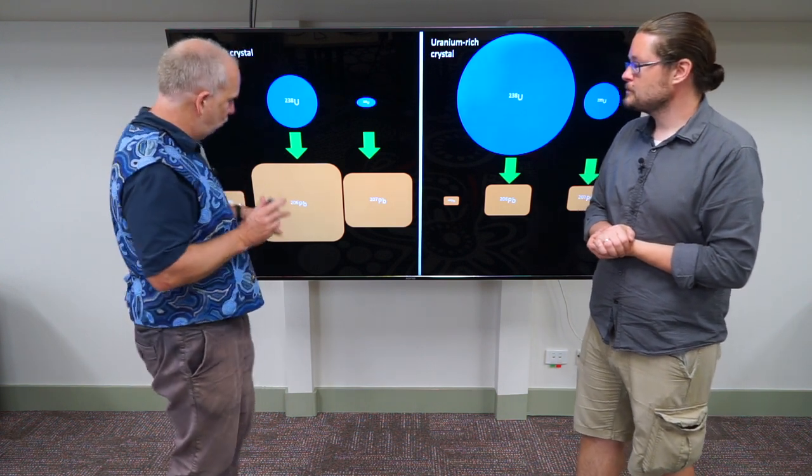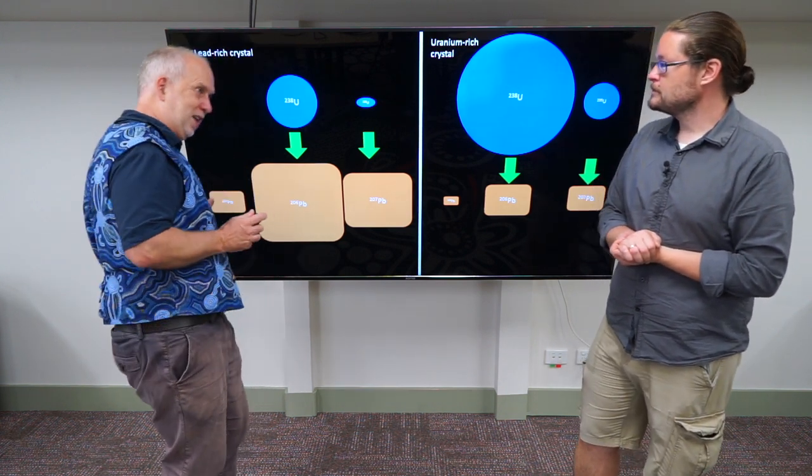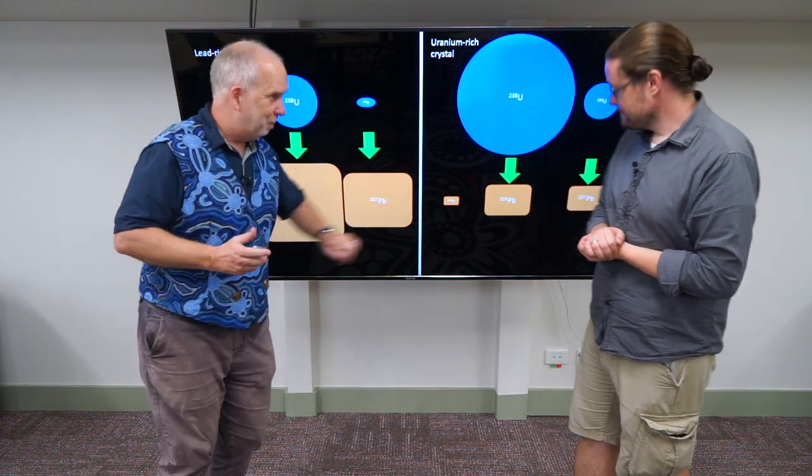So, the ratio of lead 204, 206 and 207 should be the same, whether it's a crystal that has a lot of it or a little.